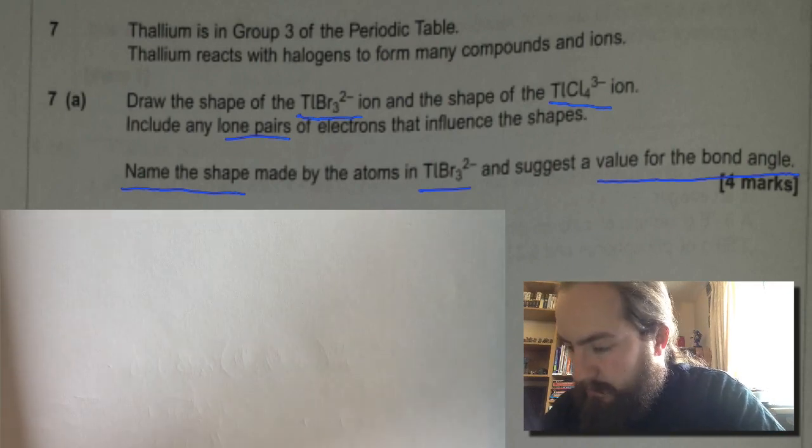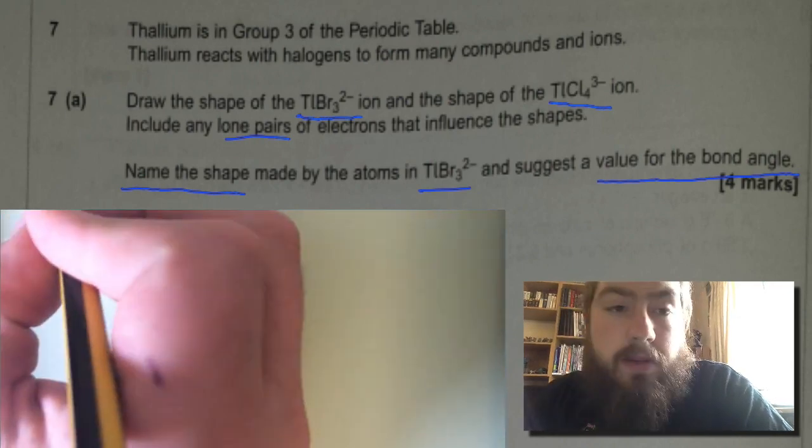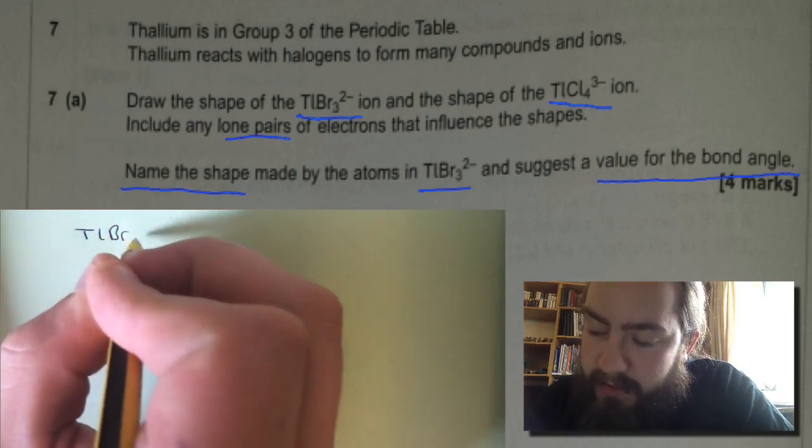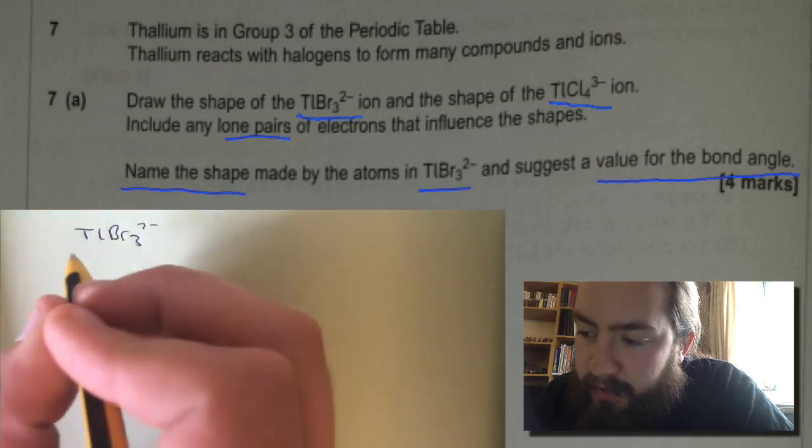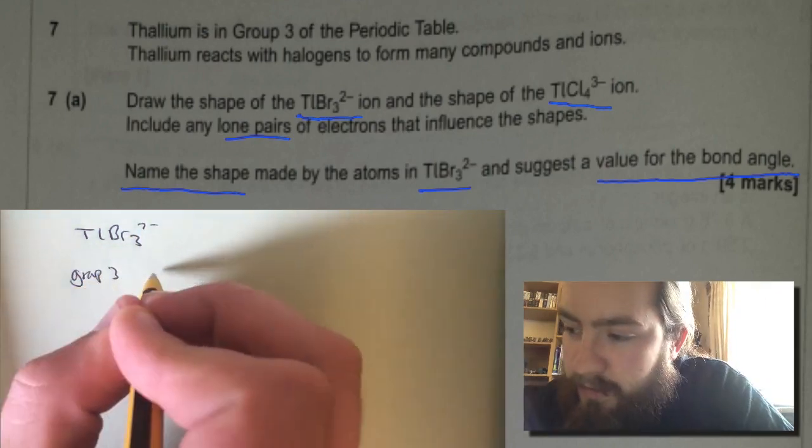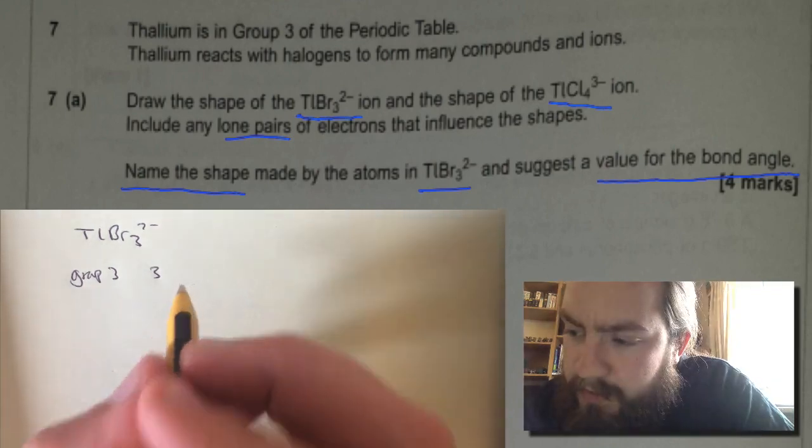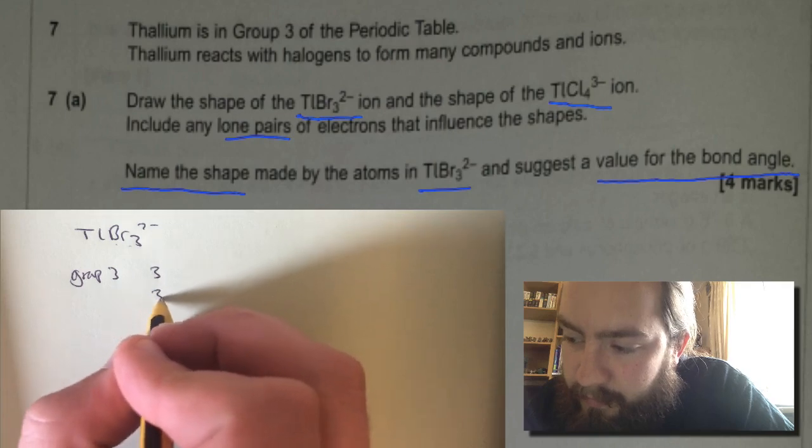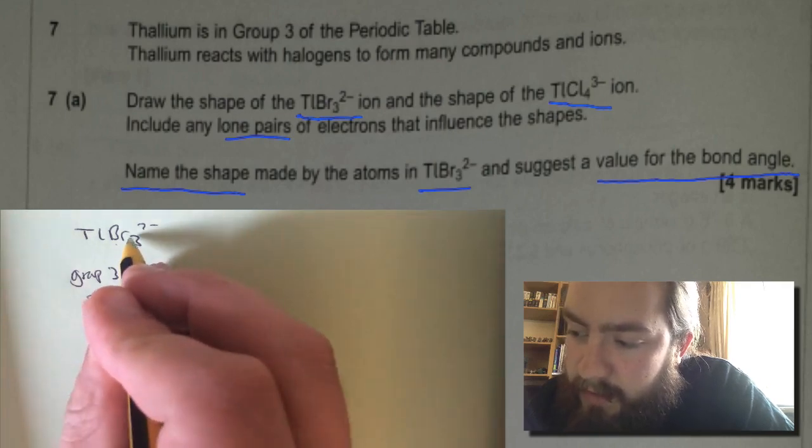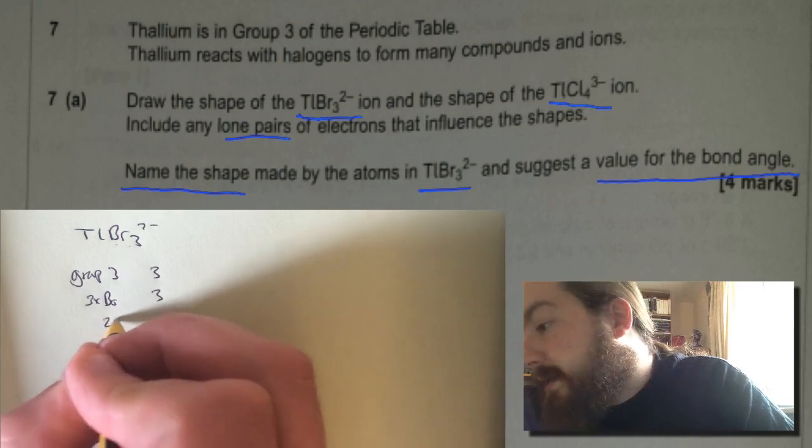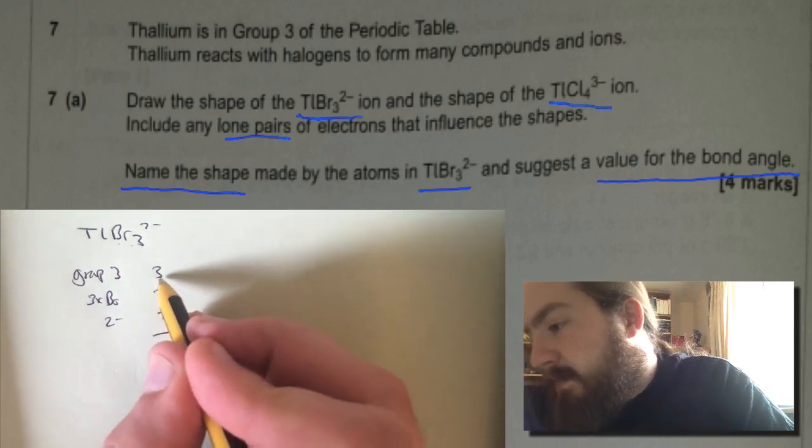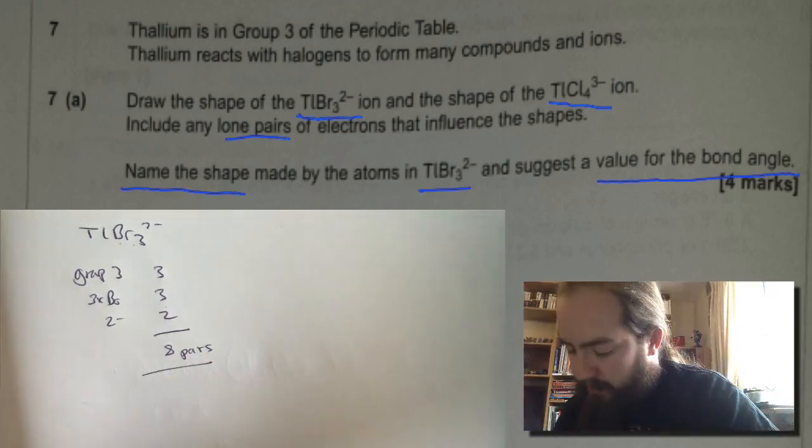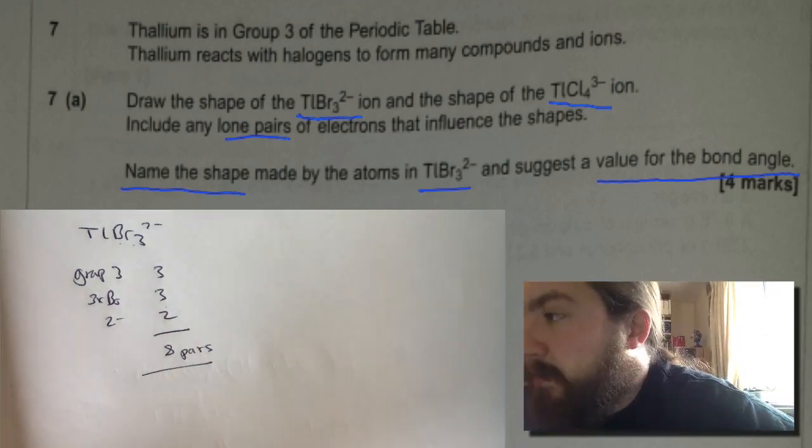Okay so we've got TlBr3 2-. Now thallium is in group 3 so we've got 3 electrons on the outer shell. It is bonded with bromide, 3 bromide so we've got another 3 electrons and it's a 2 minus ion so we've got another 2 here. This gives us 3, 4, 5, 6, 7, 8 pairs of electrons.